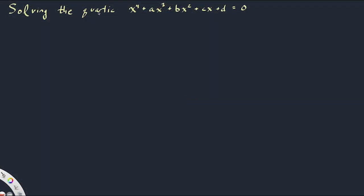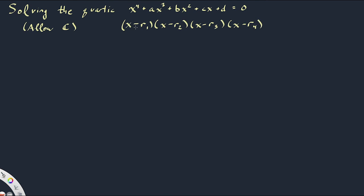To begin, let's look at the quartic equation — a degree four equation — which I put in monic form as x⁴ + ax³ + bx² + cx + d = 0. If we allow working in the complex numbers, this polynomial factors as (x − r1)(x − r2)(x − r3)(x − r4), where r1, r2, r3, r4 are the four roots of the polynomial.